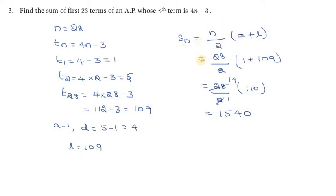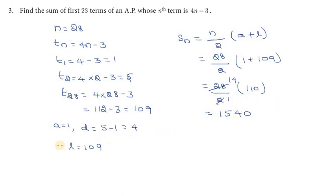We will use the sum formula: Sn = n/2 into (a + L), where L is the last term. Substituting n = 28, a = 1, and L = 109: S28 = 28/2 into (1 + 109) = 14 into 110 = 1540. So the sum of the first 28 terms, 1 + 4 + 7 + ... + 109, is 1540.